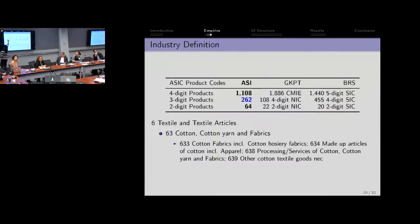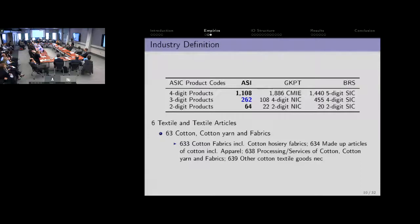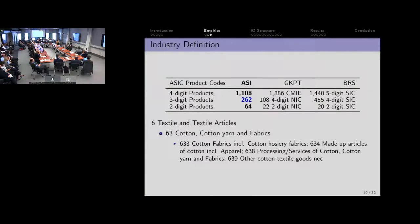I'm going to call an industry a three-digit ASIC product — that's about 262 industries that we pick up in the data. Compared to Goldberg, Khandelwal, Pavcnik, and Topalova using Indian data, their dataset is very different because it's only publicly listed firms. Theirs would have roughly 108 in their classification. In terms of what these things are: six is the one-digit code — textile and textile articles; 63 is the two-digit code for cotton, cotton yarn, and cotton fabrics; and within that are the different three-digit industries — that's what I call an industry here.